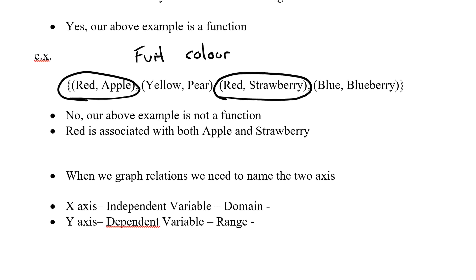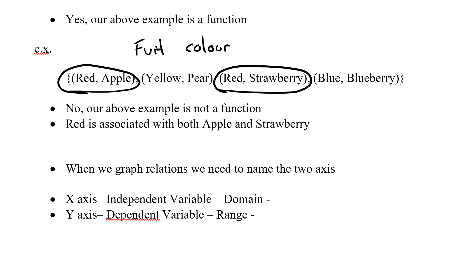Now, we want to take this to the next level, where we are actually graphing these relations. When we graph, we've got two axes. Traditionally, we'll go with a vertical and a horizontal. These axes have two names.